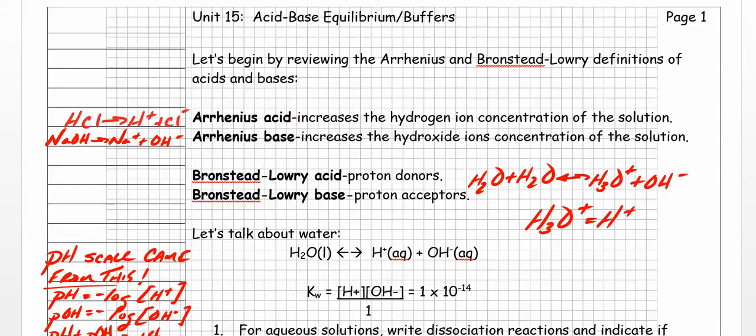Here we go. Let's begin by reviewing Arrhenius and Bronsted-Lowry definitions of acids and bases. There are basically two definitions that we need to know about, and you do have to keep the names straight: the Arrhenius definition and the Bronsted-Lowry definition.